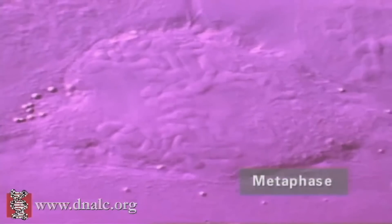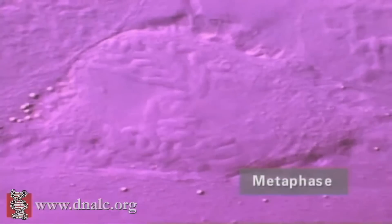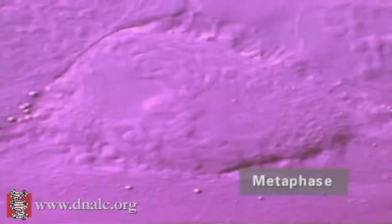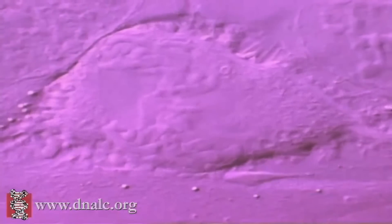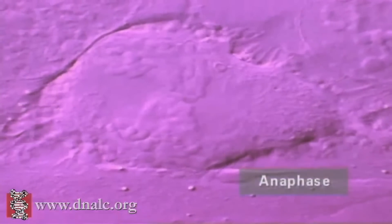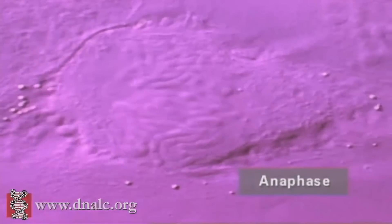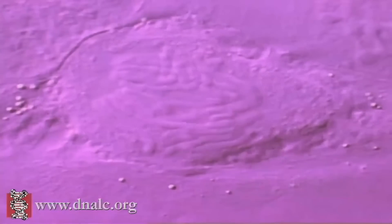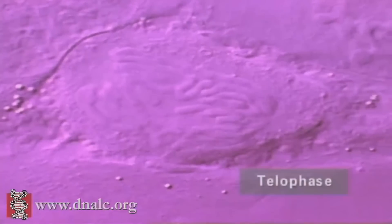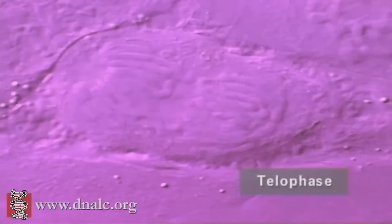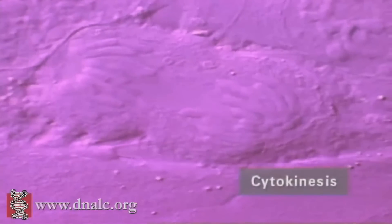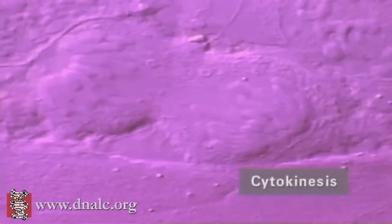Unicellular organisms divide to reproduce themselves. The cells of multicellular organisms also divide to develop a fertilized egg, seed, or spore, to grow, to repair the body, replacing damaged cells. Each cell has a life cycle called the cell cycle, of which cell division is only one part.